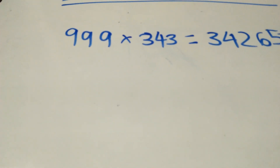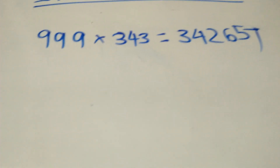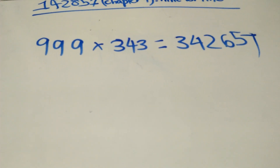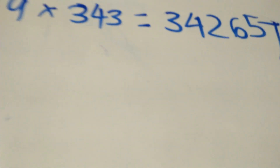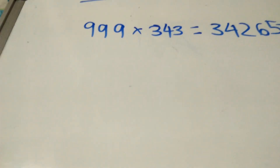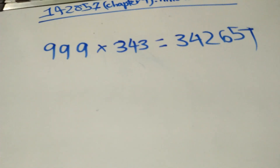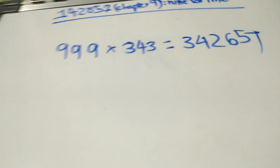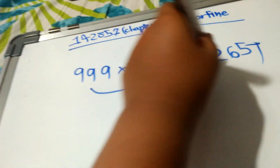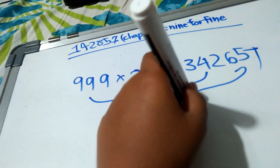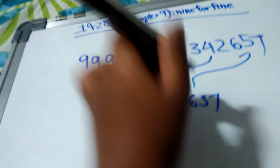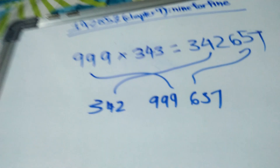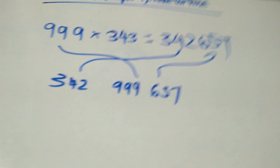There is a chance that this number can appear in a special way. There can be a possibility that there were three nines between 342 and 657 — meaning 342,999,657. So 999 can solve the problem of 342 and 657. This is one property you have to remember.